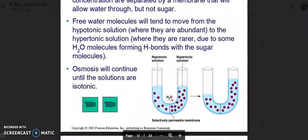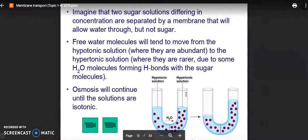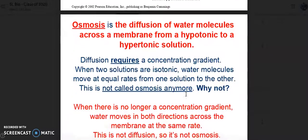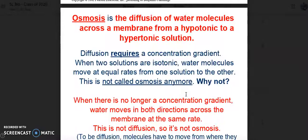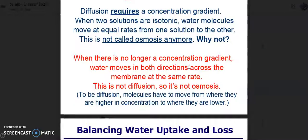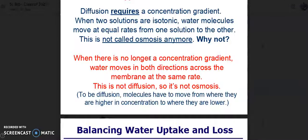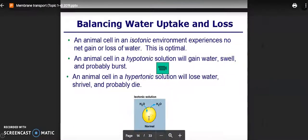Osmosis will continue until the solutions are isotonic. It's essentially trying to get that isotonic state. Osmosis is the diffusion of water molecules across a membrane from a hypotonic to a hypertonic solution. Diffusion requires a concentration gradient. When two solutions are isotonic, water molecules move at equal rates from one solution to the other. This is not called osmosis anymore. Why not? When there is no longer a concentration gradient, water moves in both directions across the membrane at the same time. That is not diffusion, so it is not osmosis. To be diffusion, molecules had to move from where they are in higher concentration to where they are lower.